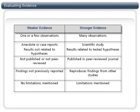All evidence is not created equally. Let's take a look at these charts. We'll compare stronger to weaker evidence. Weaker evidence contains only a few observations, while stronger evidence contains many observations. Stronger evidence is collected through scientific study where a hypothesis is developed and based on theories or conceptual models. Weaker evidence is based on case studies or anecdotal evidence.